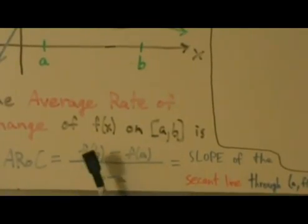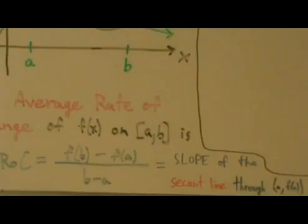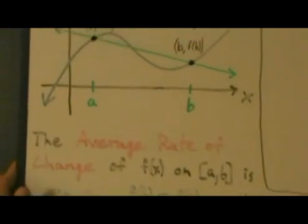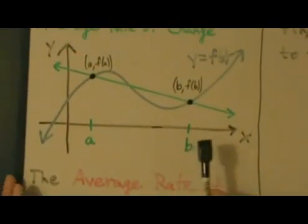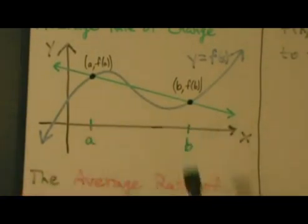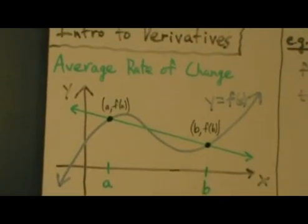So the average rate of change of a function on an interval a to b is actually the slope of the secant line through those two points, a, f of a and b, f of b. So that's really important to remember, is that the average rate of change of a function on an interval is the slope of the secant line that goes through the endpoints of that interval. All right, so that's the general definition there. So let's see an example here.